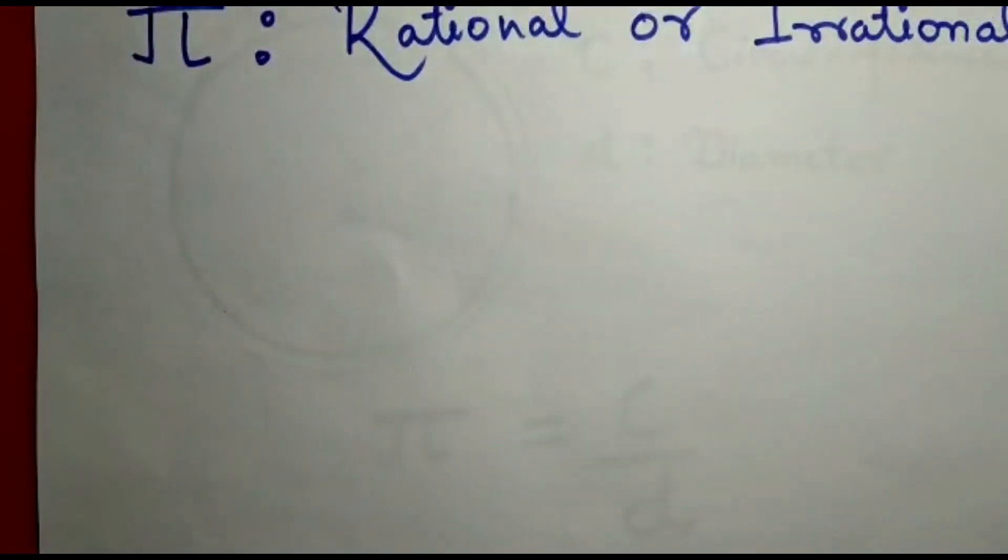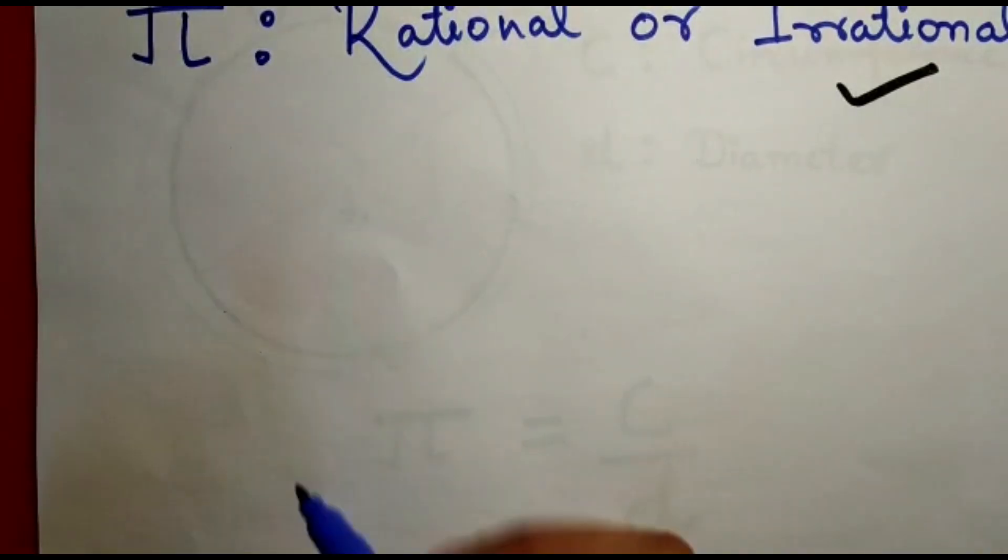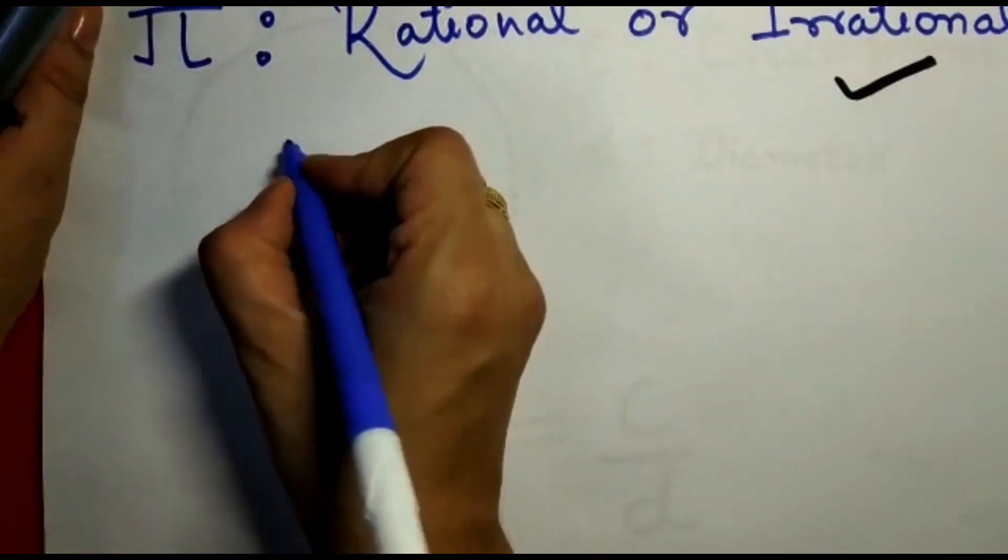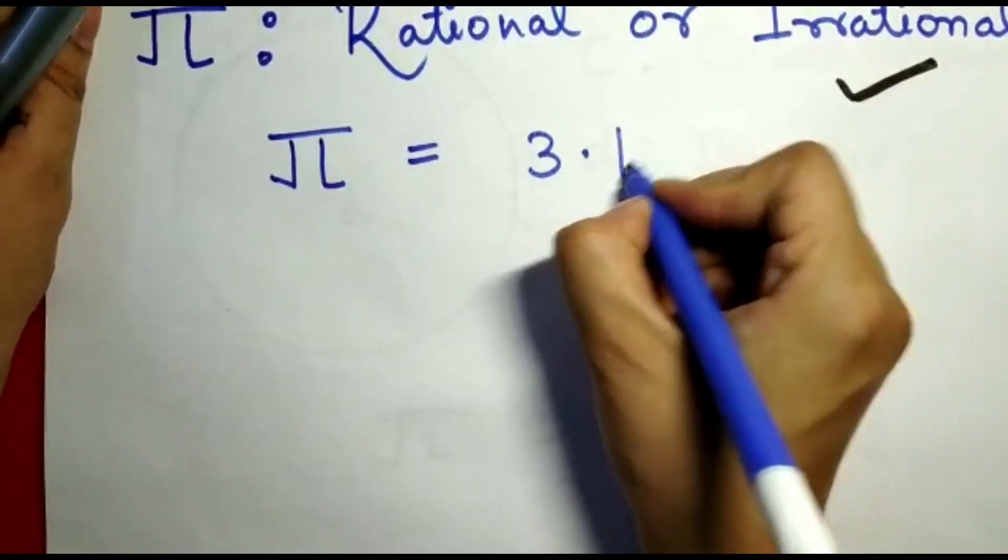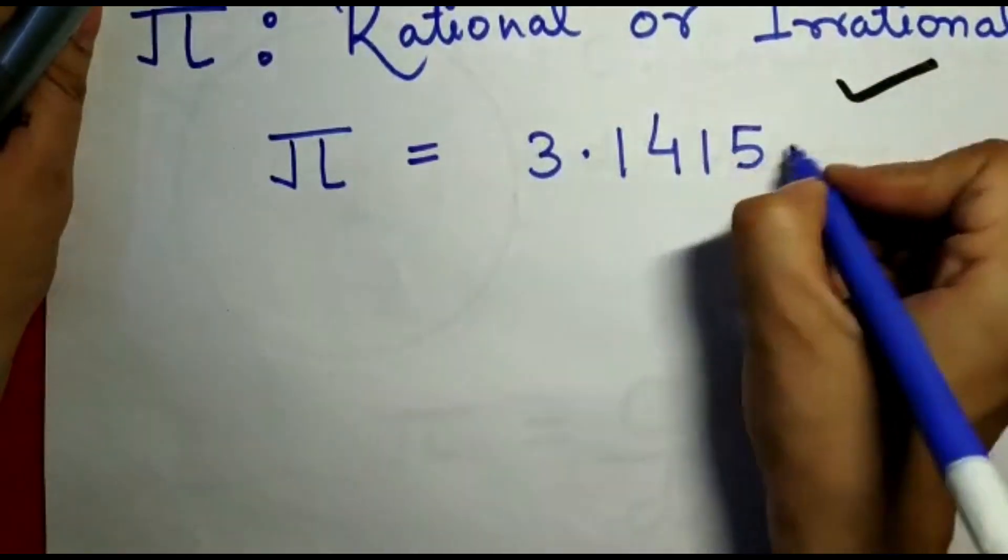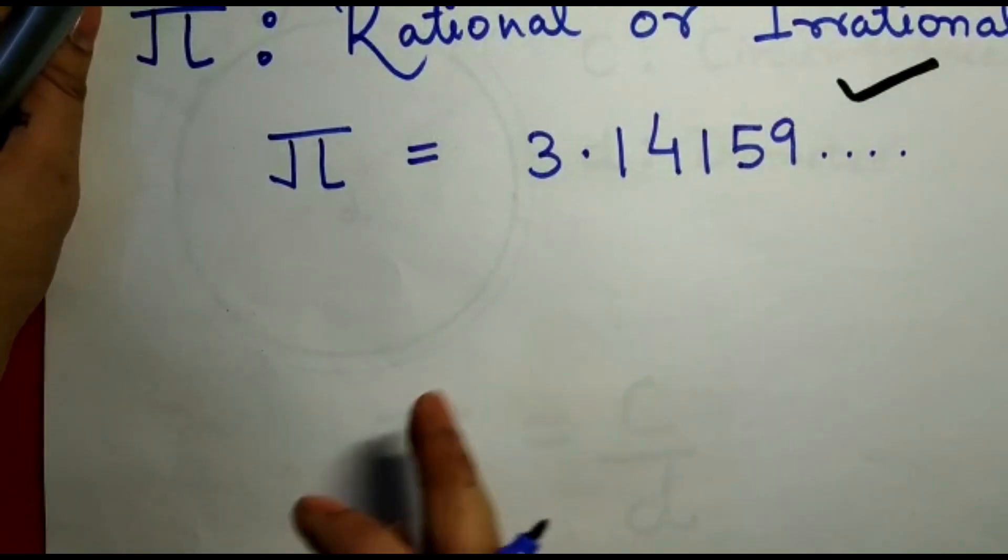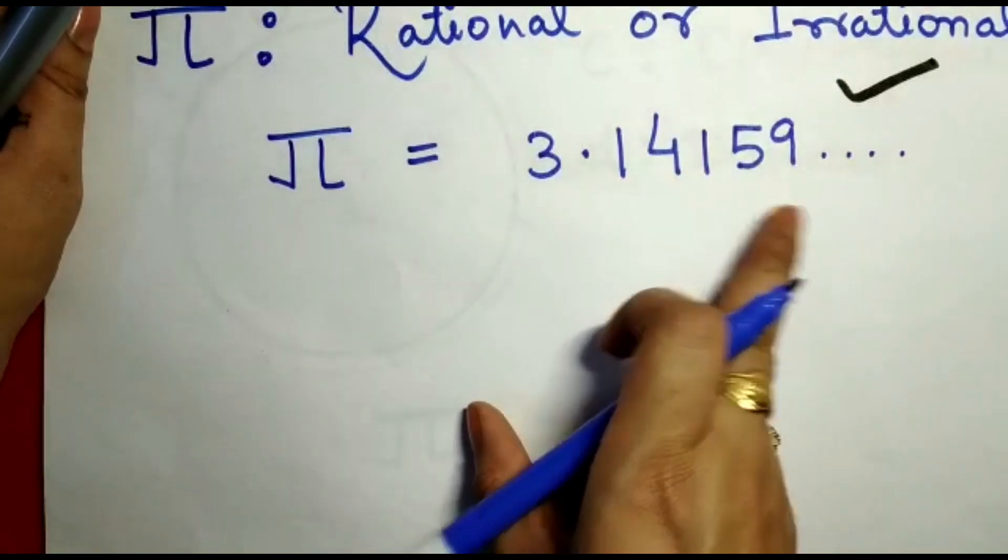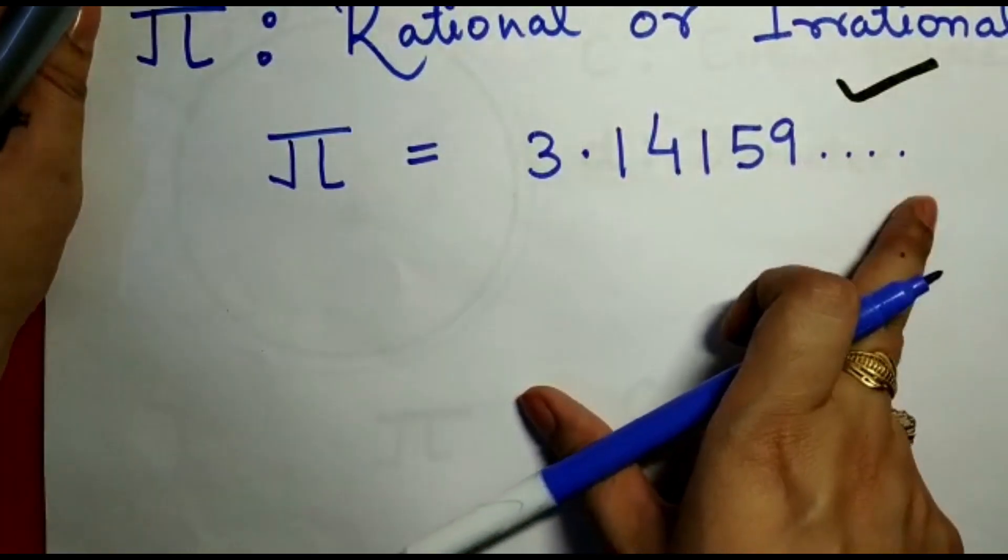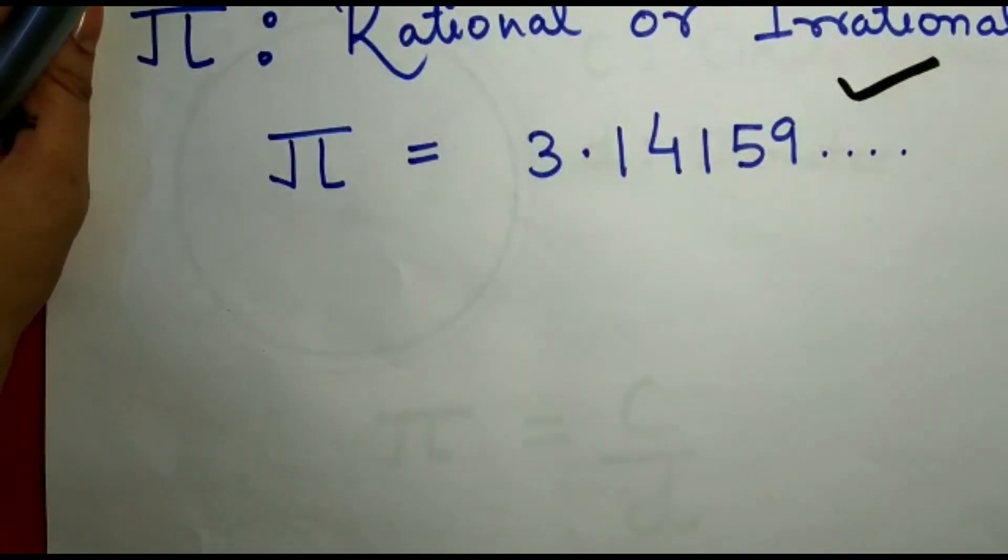The answer is irrational number. Pi is an irrational number. Why? Because the value of Pi equals 3.14159... That means it's not terminating. The digits are not repeating and not terminating because the dots indicate it's going up to infinity.